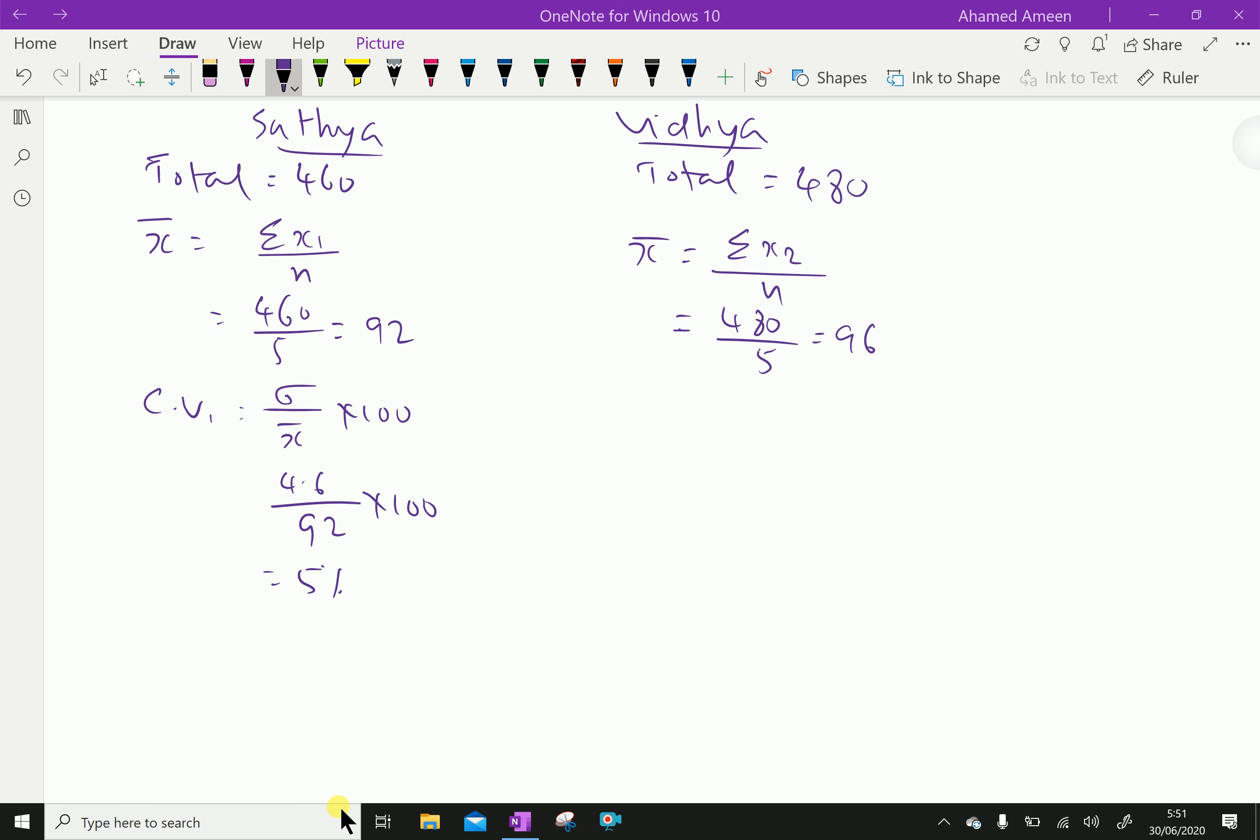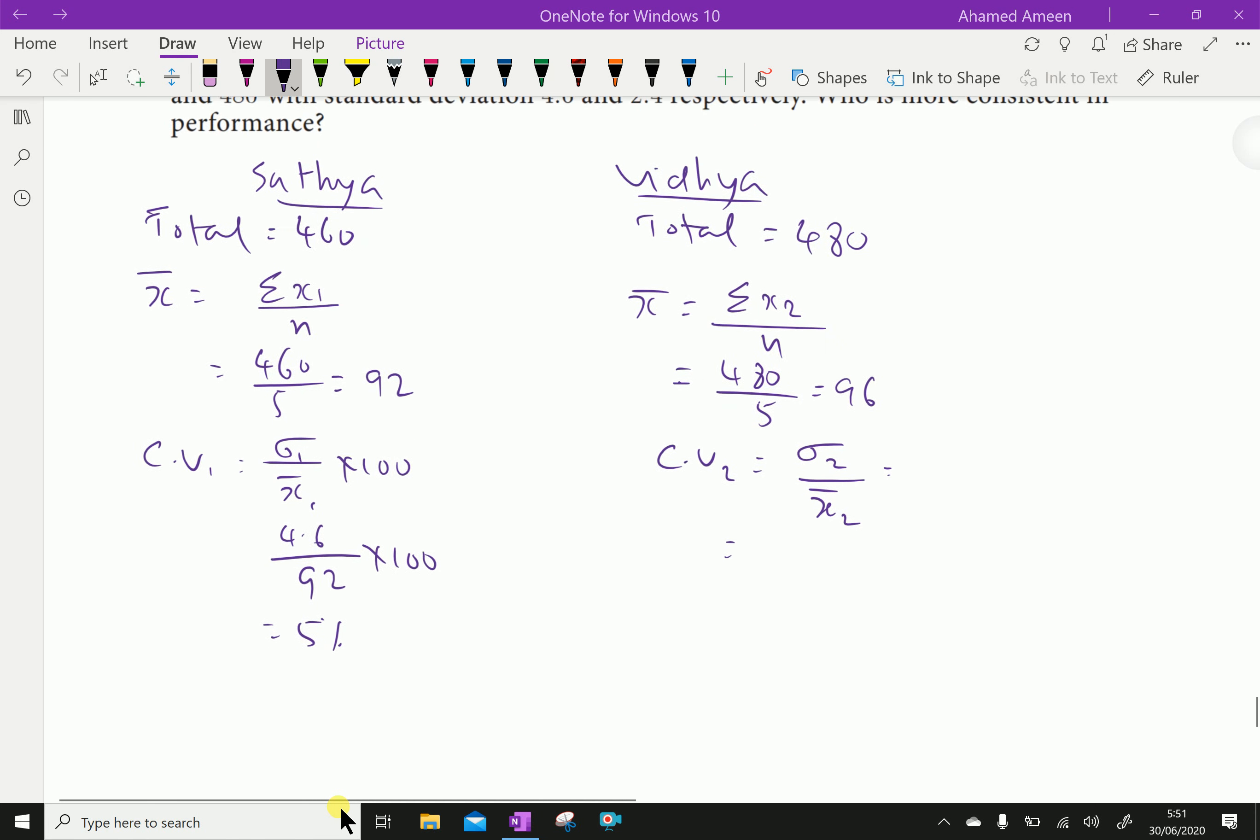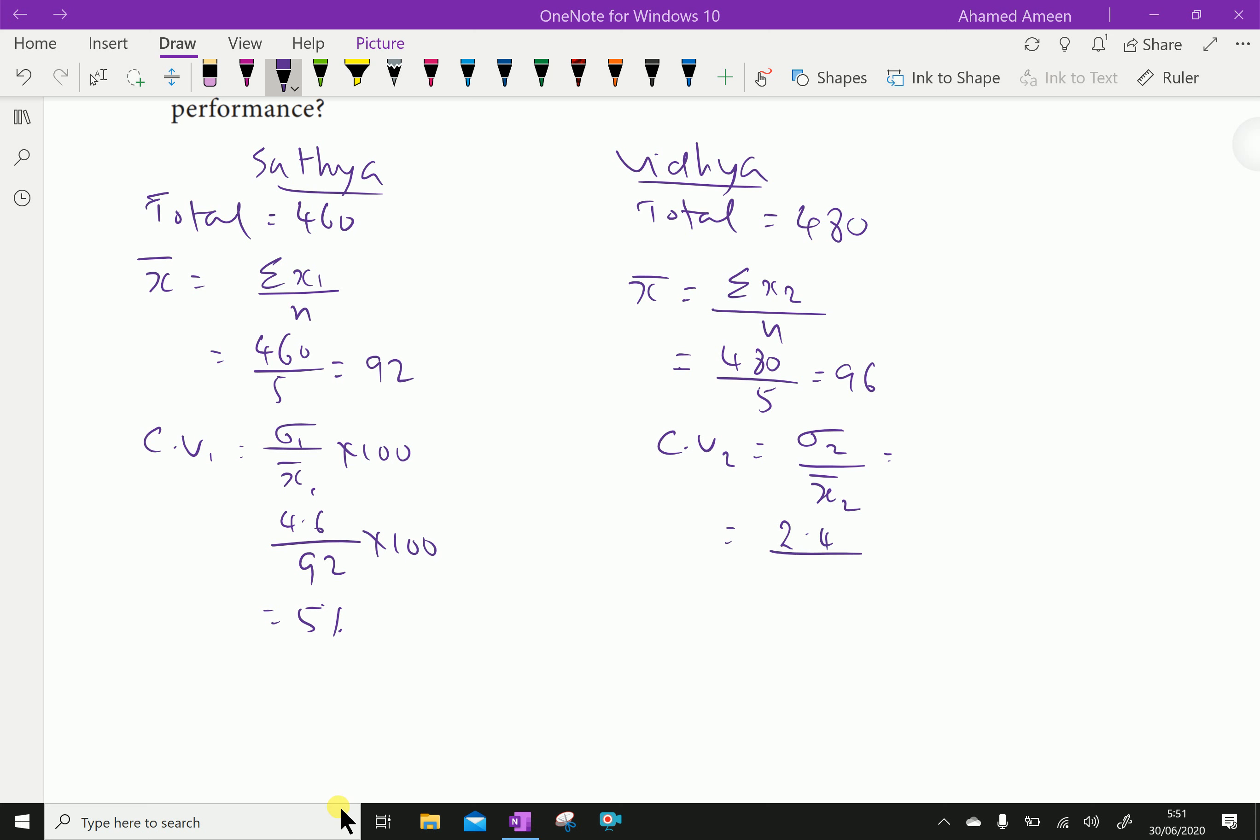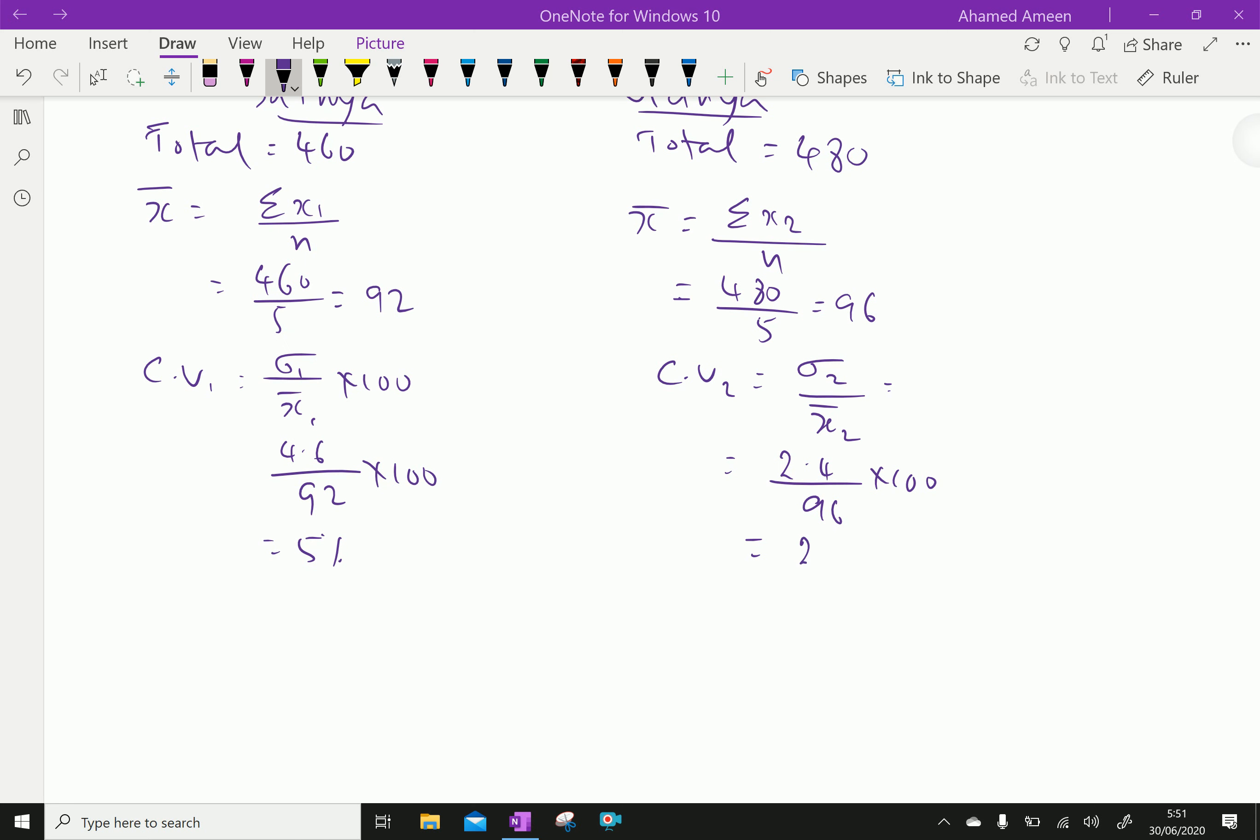Coefficient of variation for the second student is sigma 2 over x bar 2, which equals 2.4 over 96 into 100, which equals 2.5 percent.